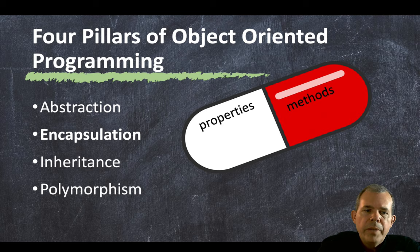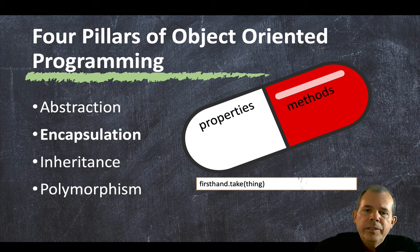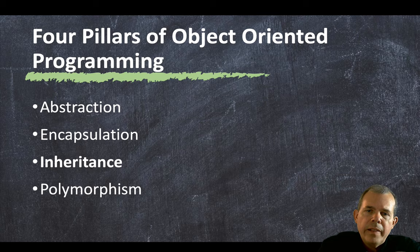The second pillar is encapsulation. Encapsulation is the idea that you have a complete package — you don't work with an object halfway in one part of the code and then do operations in another part of the program. Encapsulation says we're going to do everything together. For instance, first_hand.take(thing) — every piece of code that handles that is inside the class definition. It's all inside the capsule.